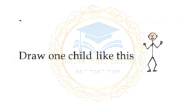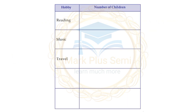Counting hobbies in the class: Reading — 3 children. Music — 4 or 5 children. Travel — 5 or 6 children.